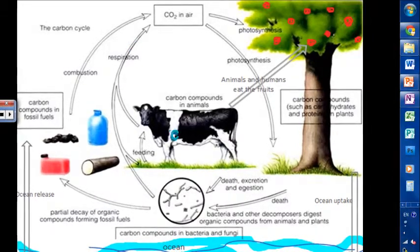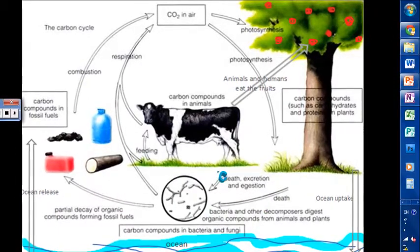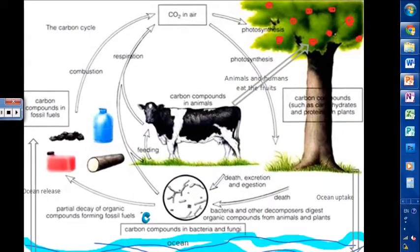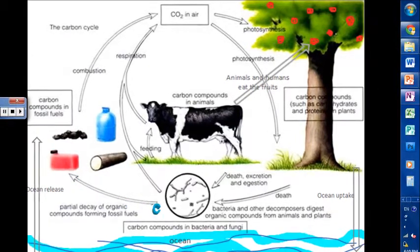Bacteria and decomposers digest the organic compounds from dead plants and animals, or the organic compounds could decay, forming fossil fuels after millions of years.